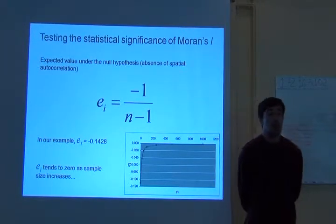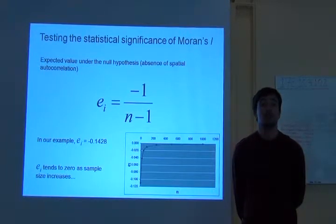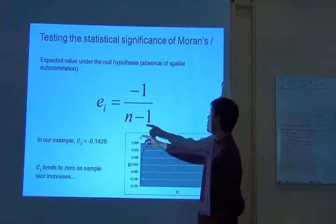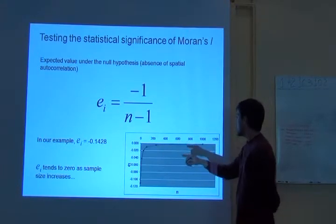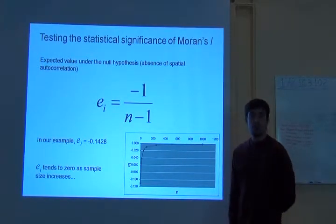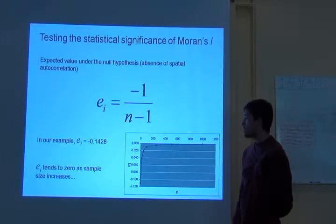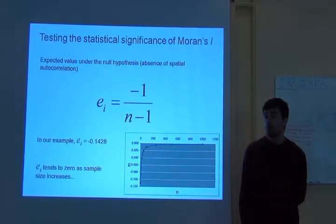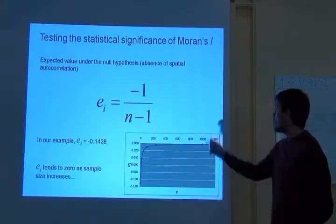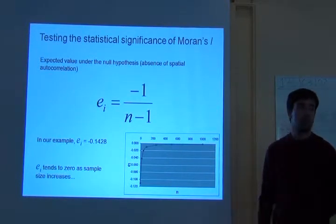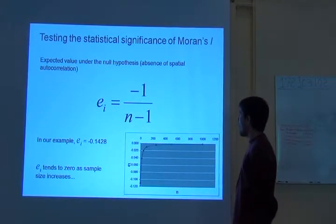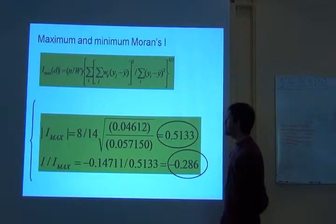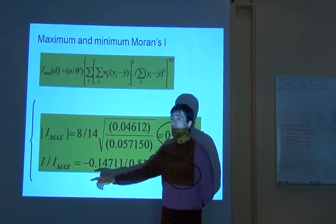Your expectation for Moran's I index when there is no spatial structure depends on your sample size. And that's just a mathematical or statistical expectation for that particular number. It's not very informative because it's an expectation under the null hypothesis. The null hypothesis is the complete absence of spatial autocorrelation. So if things are not related at all, what would be the expected Moran's I value? It's given by this formula over here. And basically, when you have more and more and more sites, as you have more sites, Moran's I tends to zero.